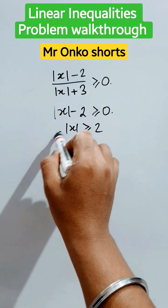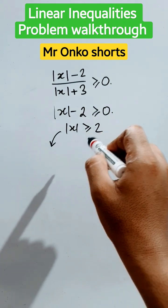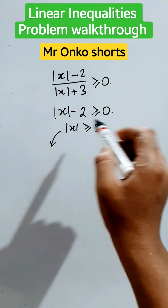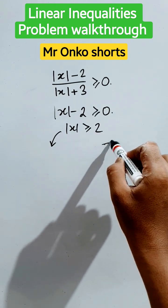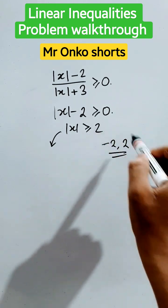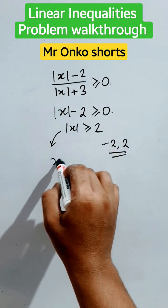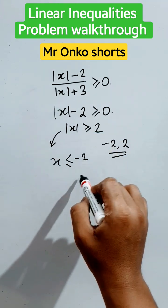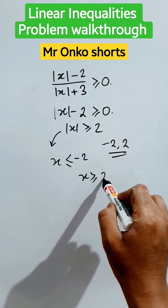Now we have to apply the modulus formula based on linear inequalities. That is, we have to find the negative and positive version of the given constant. Now, the open mouth is towards the variable, so x must be less than or equal to minus 2 and x must be greater than or equal to 2.